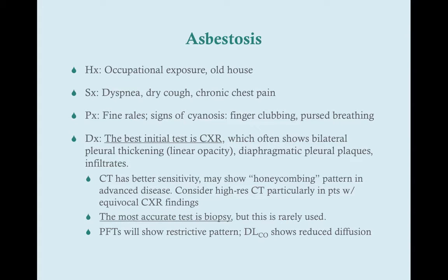CT has better sensitivity than chest X-ray, and in advanced disease it may show a honeycombing pattern. You should consider getting a high-resolution CT in patients with a history suggestive of asbestosis but whose chest X-ray doesn't show the expected findings. So get a chest X-ray first; if you have no findings of asbestosis but a history that's suggestive, then get a CT, and the radiologist will be able to tell you if the patient has asbestosis.